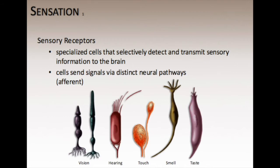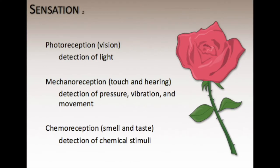Sensory receptors set off action potentials in sensory neurons, which then carry the information to the central nervous system. The sense organs and sensory receptors are of three classes based on the type of energy being transmitted. Photoreception involves the detection of light. Mechanoreception is the detection of pressure, vibrations, and movement, perceived as touch, hearing, and equilibrium.